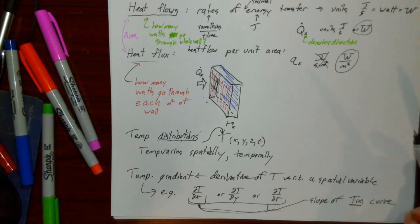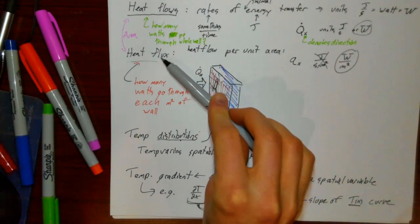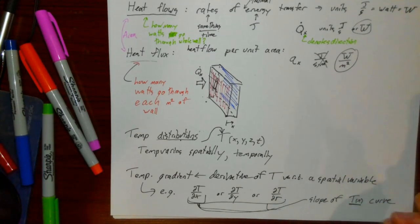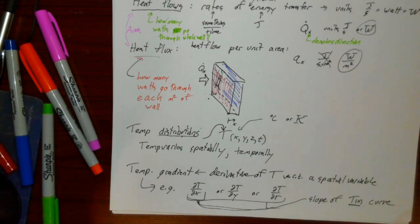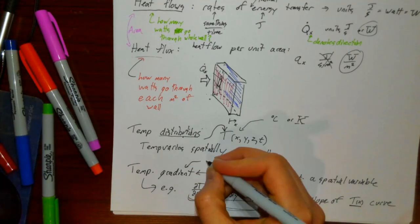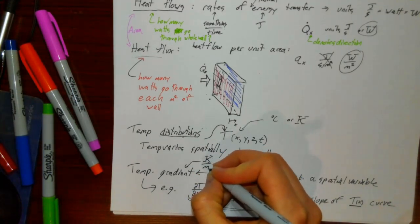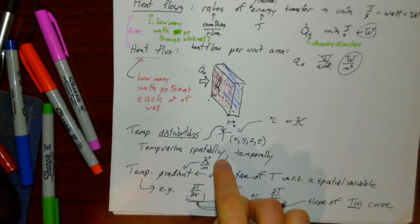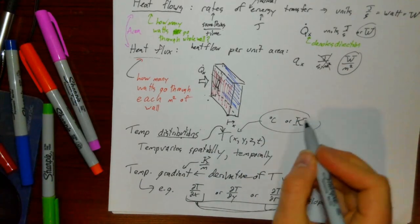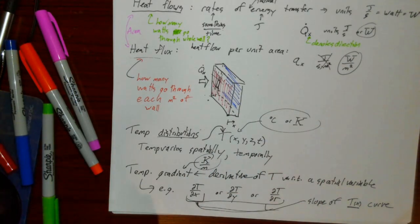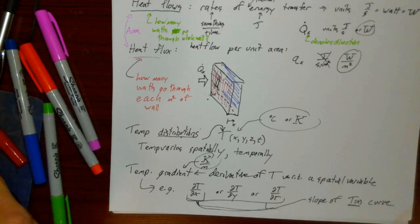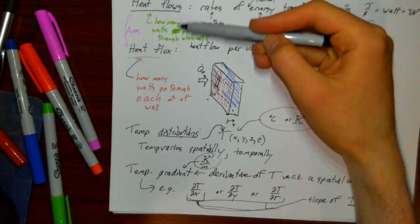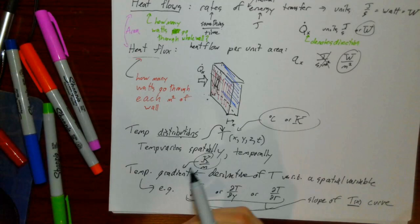Four key definitions for conduction: heat flows in watts; heat fluxes in watts per meter squared; temperature in degrees Celsius or Kelvin; and temperature gradient with units of Kelvin per meter — since dT/dx has units of K/m. These are four terms I'll use extensively in heat transfer problems.